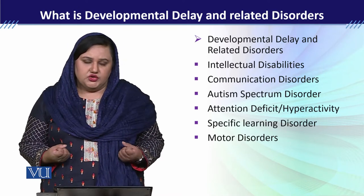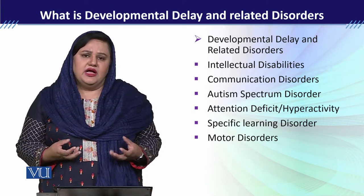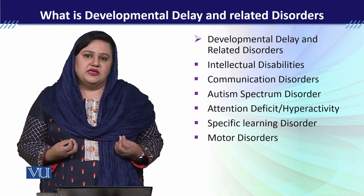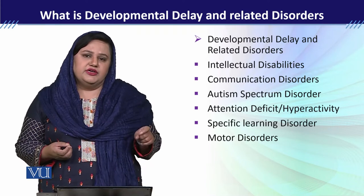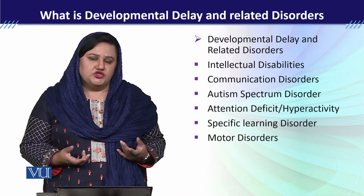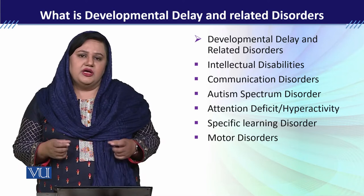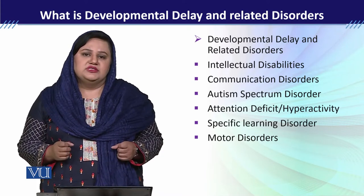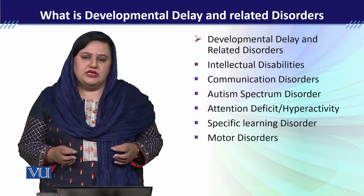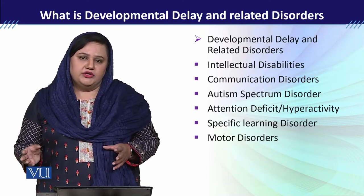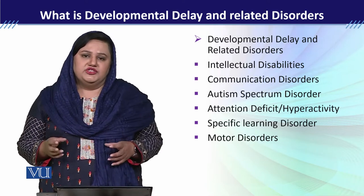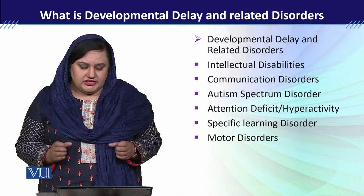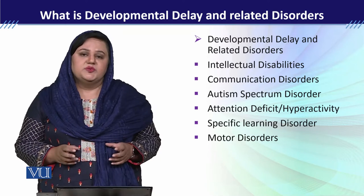سکول میں زیادہ پتا چلتا ہے کہ بچے کے اندر delay آ رہی ہے۔ دوسرا disorder communication disorder ہے، جو عام طور پر بچوں کے اندر develop ہوتا ہے۔ اس میں بچوں کو articulation کا مسئلہ ہوتا ہے، جیسے قاف کو تے بول دینا۔ اسی طرح stuttering کا problem ہوتا ہے جس میں بچہ ہکلاہٹ کا شکار ہوتا ہے یا مختلف الفاظ پر اٹک اٹک کر بولتا ہے۔ اس قسم کے problems communication disorder میں آتے ہیں اور اس کی occurrence early childhood میں ہوتی ہے۔